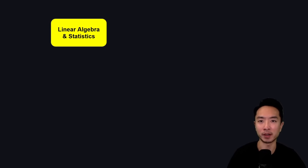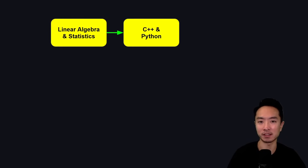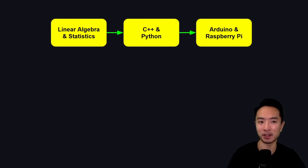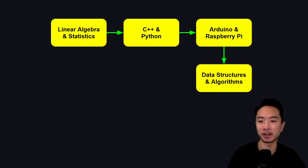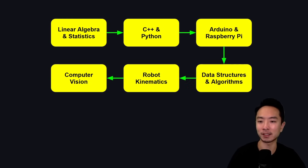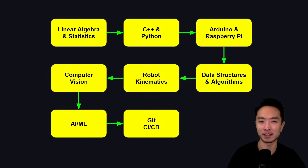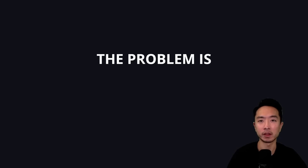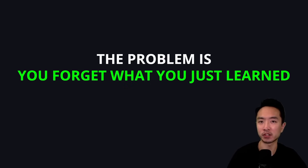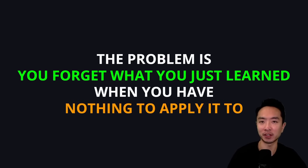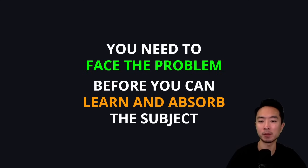The problem with most robotic software engineering roadmaps out there is that they start off like this. They say learn linear algebra and statistics, go into C++ and Python, learn Arduino and Raspberry Pi, go into data structures and algorithms, learn robot kinematics, study computer vision, go into AI and machine learning, and then do some Git and CI/CD. The thing is, this just doesn't work for most people. The problem is you forget what you just learned when you have nothing to apply it to. You need to face the problem before you can learn and absorb the subject.